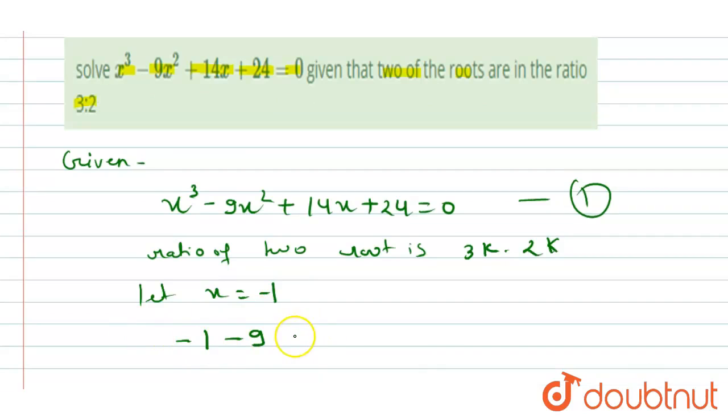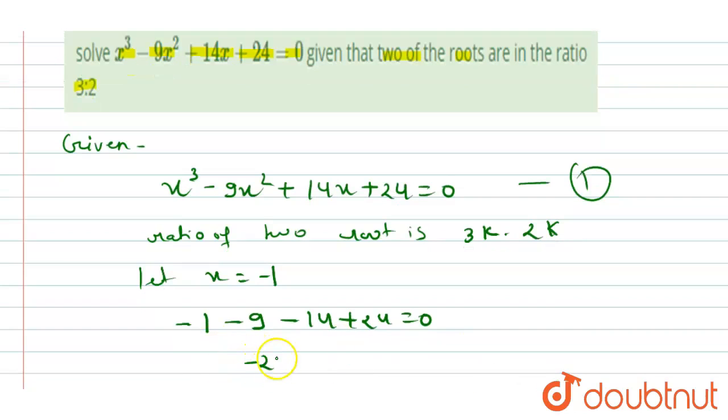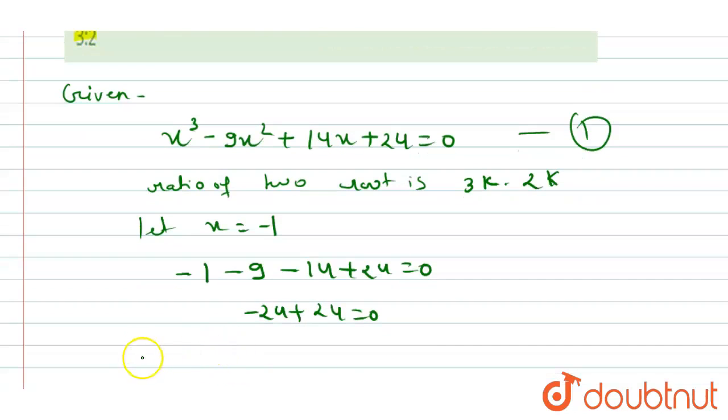When we put -9, here -14 + 24 = 0. When we solve this, we will get -24 + 24 = 0. It means this equation is satisfied, so -1 is the root of the given equation.